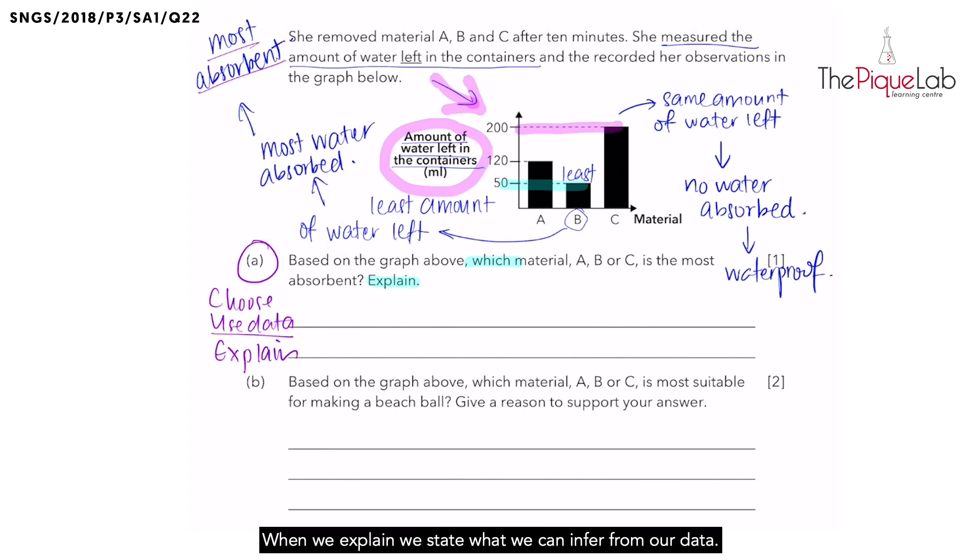Next, explain. When we explain, we state what we can infer from our data. That means, what can we conclude from this data. So since the amount of water left in the container is the least, this shows that material B absorbed the most water and is the most absorbent. And that's how we should phrase our answer using CUE.